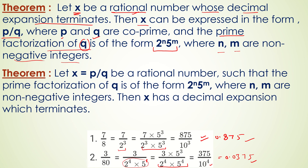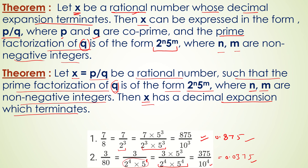Let us see one more theorem. Let x equal p by q be a rational number such that the prime factorization of q is of the form 2 to the power n into 5 to the power m, where n and m are non-negative integers. Then x has a decimal expansion which terminates. This is the converse of the above theorem.